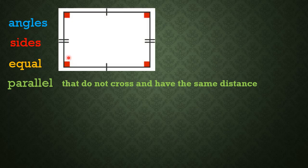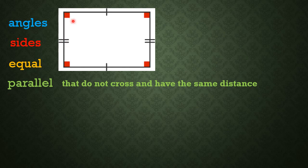Look at this rectangle. This rectangle has four right angles. Each angle measures 90 degrees. You can also see that the opposite sides have the same length, and they are also parallel.